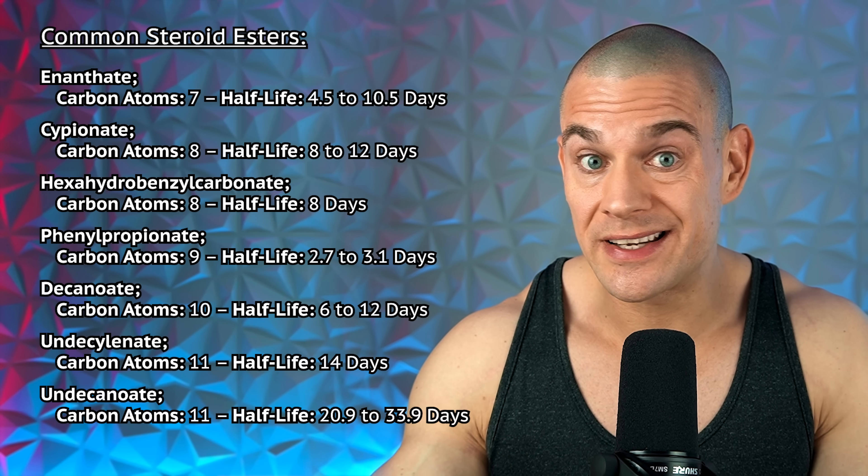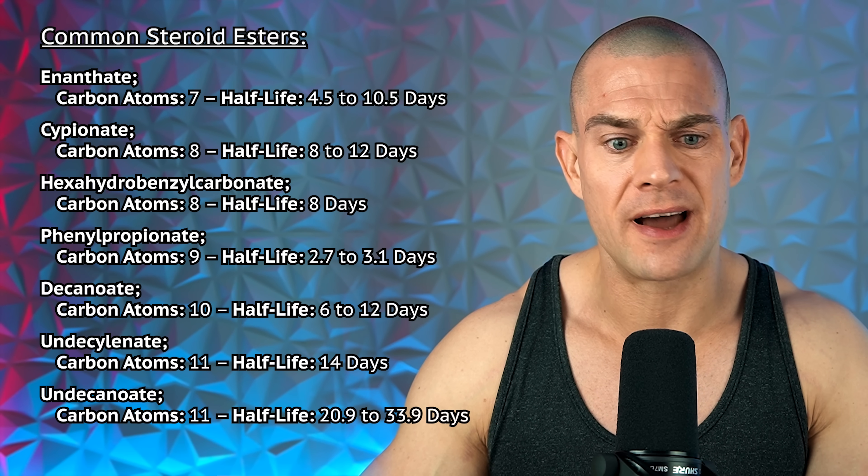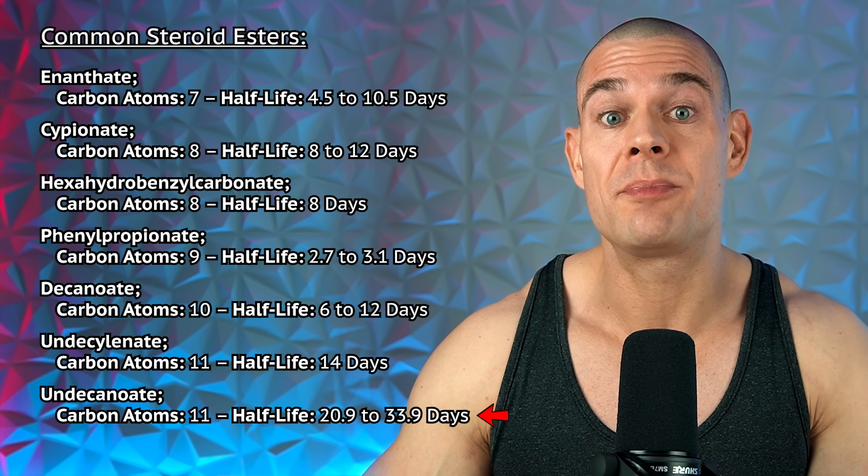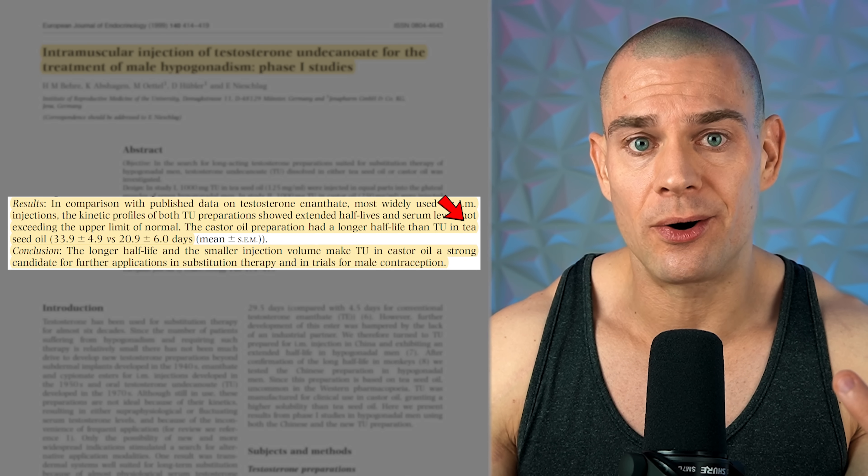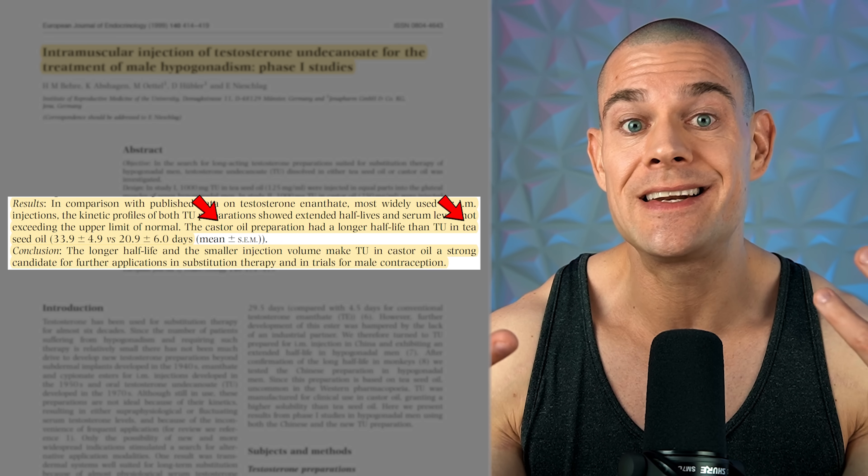Regardless of ester, you should inject every single day. Daily injections give you the most stable serum concentrations and the most anabolic response because there are fewer fluctuations between peaks and valleys. It's in those peaks that testosterone metabolizes into estradiol and dihydrotestosterone. If we look at undecanoate with 11 carbon atoms, we see a range of half-lives between 20.9 days in tea seed oil up to 33.9 days in castor oil — so the carrier oil highly determines the half-life of whatever ester you're injecting.